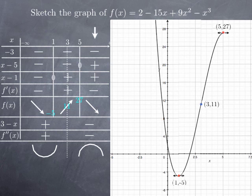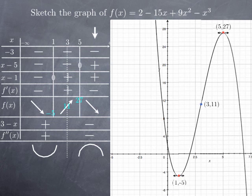And from 5 to infinity, the function is still concave down but decreasing. So I can add a decreasing concave down piece of the curve. And now I have sketched the graph of the function.